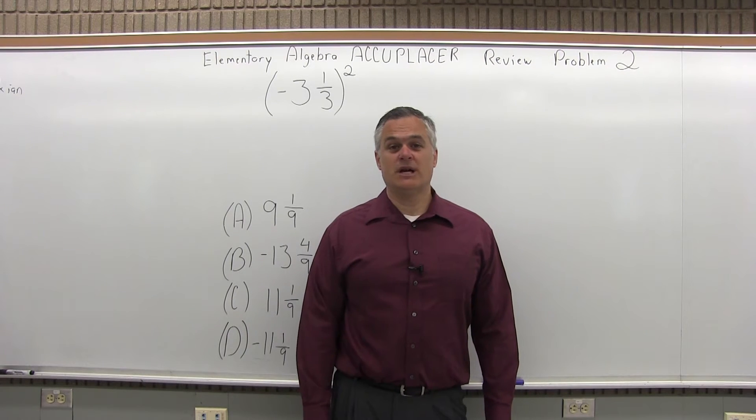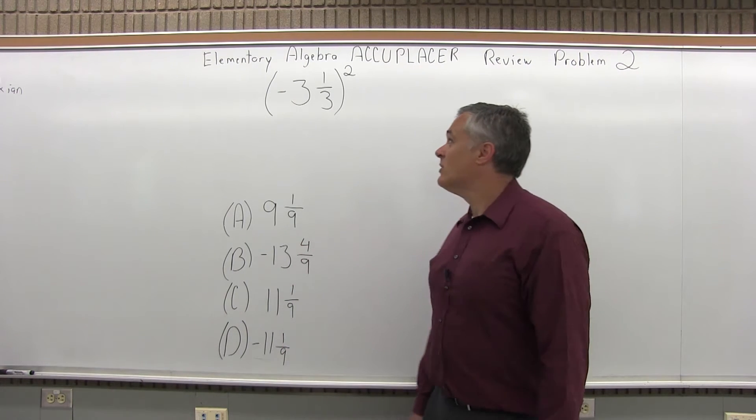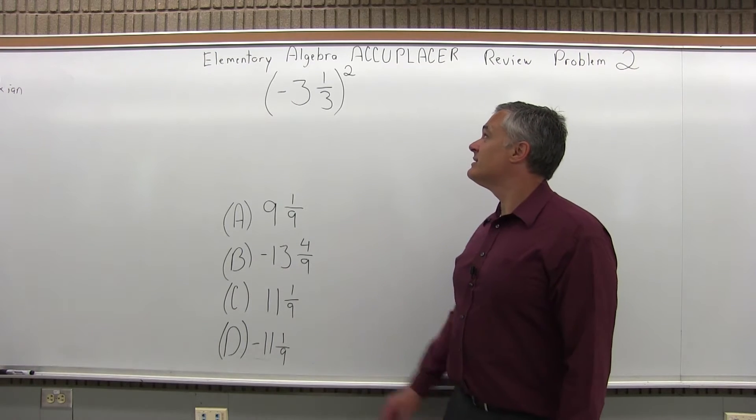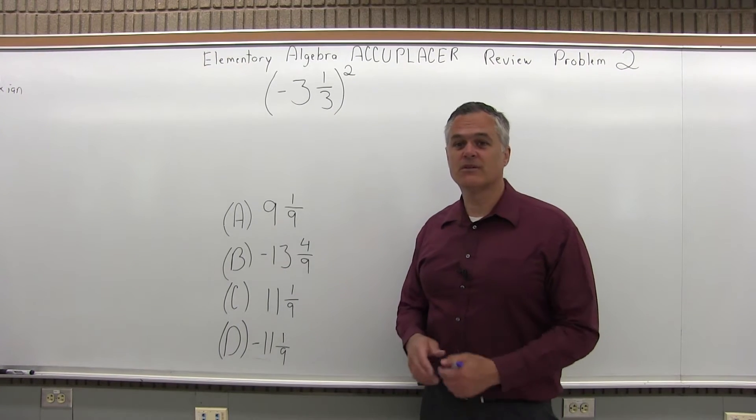This is the Elementary Algebra Accuplacer Review, Problem 2. We have negative 3 and a third to the second power, or we'd say negative 3 and a third squared.